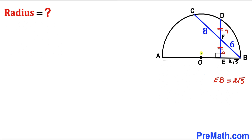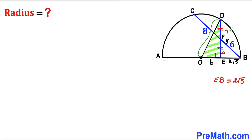Now let's connect center O with point D. As a result we get right triangle OED. We can see that segment DE equals 4 plus 4, which is 8 units — let me call this side lowercase b. Since OD and OB are both radii of the same semicircle, OB equals B plus 2√5, and therefore OD also equals B plus 2√5.